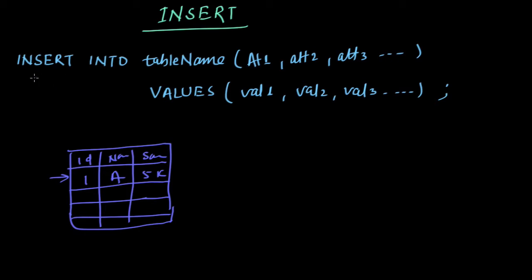INSERT, then this is a keyword, INTO. So INSERT INTO, then this is table name. If I want to insert value in employ table we will write employ. Then these are attributes, so attribute 1, attribute 2. For example in this case it would be id, name, salary.